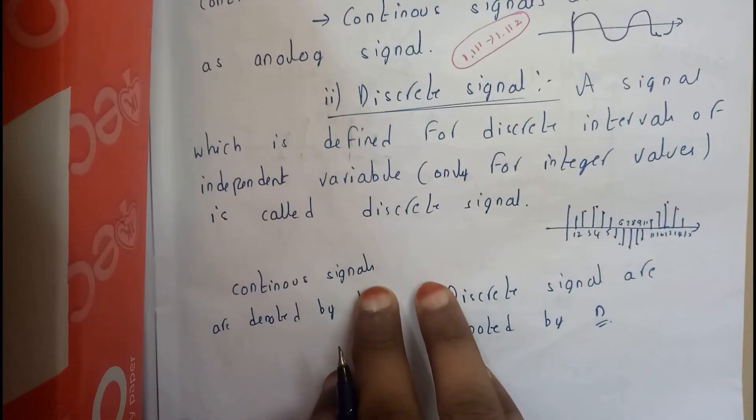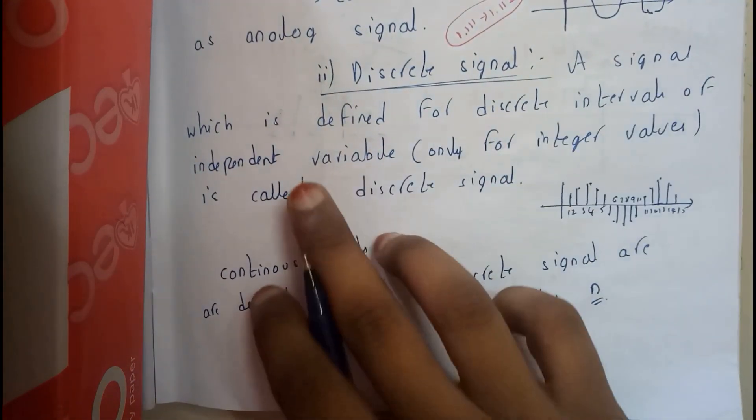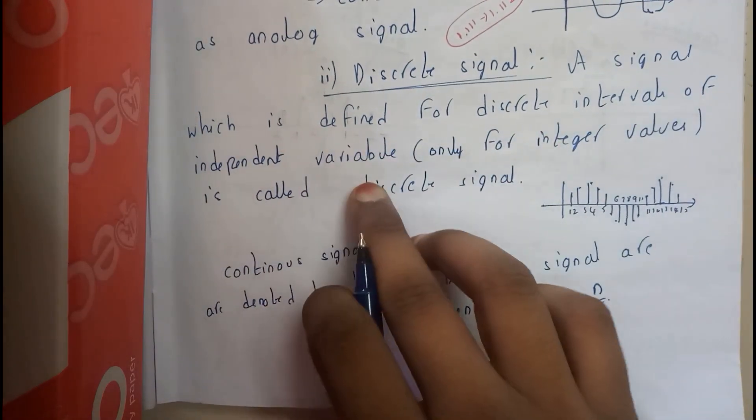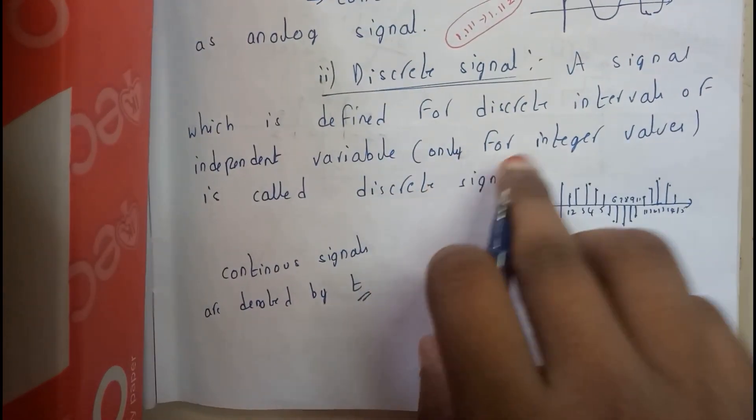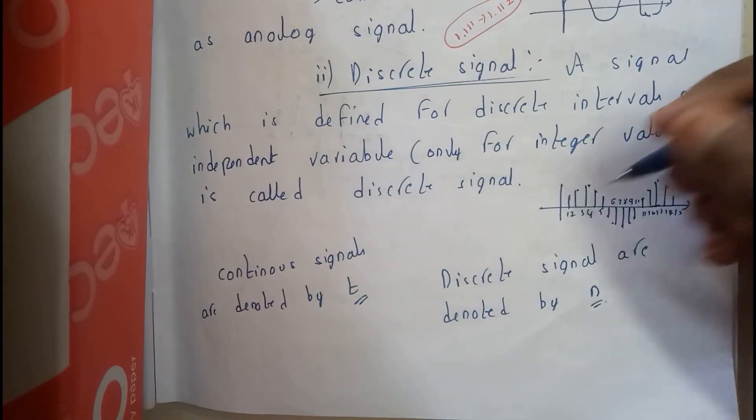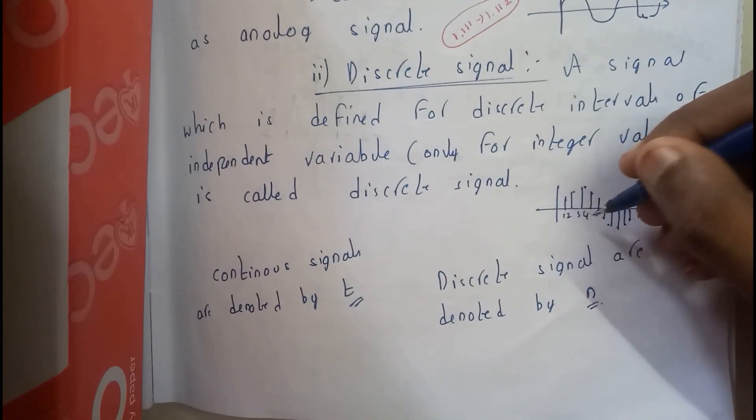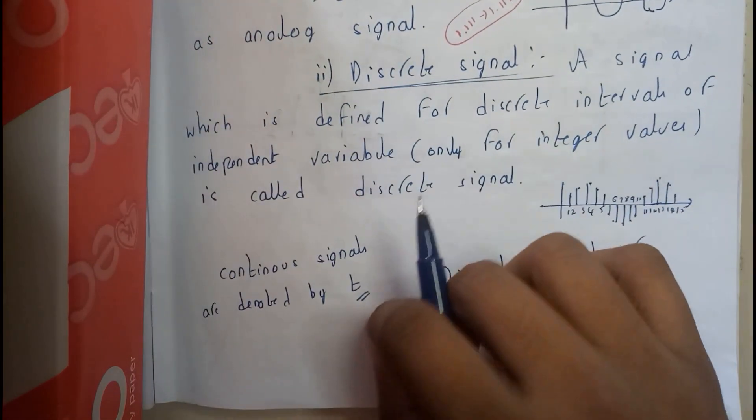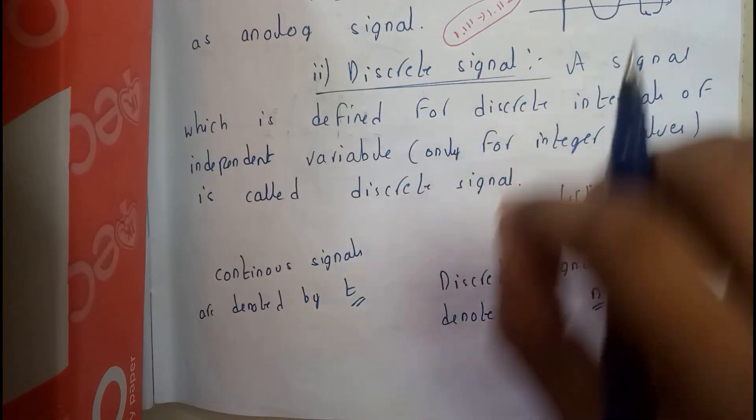Similarly, when we come to discrete signals, a signal which is defined for discrete intervals of independent variables. It is nothing but only for integers. For one you will have a value, for two you will have a value, three, four, five, six like that. For every particular integer.